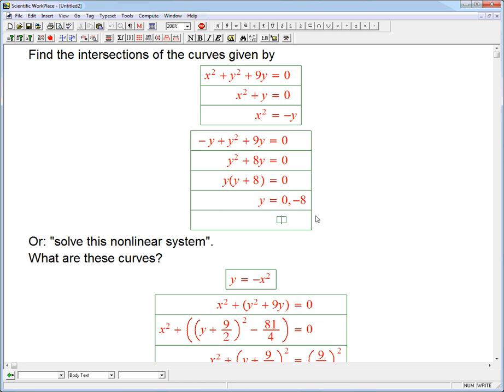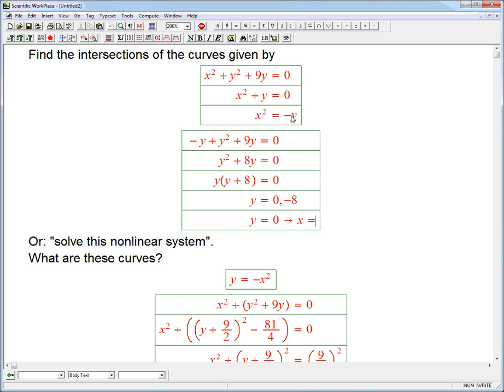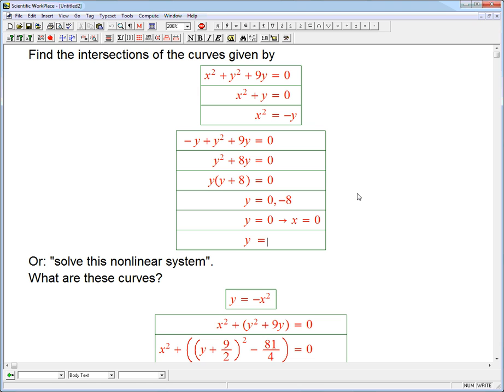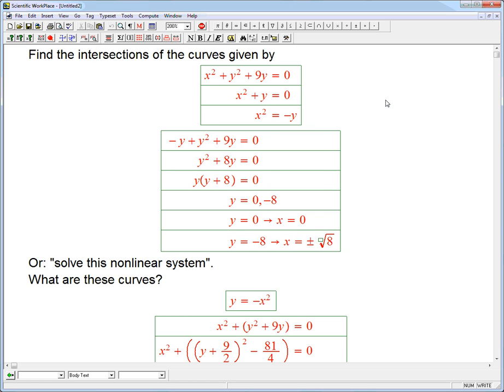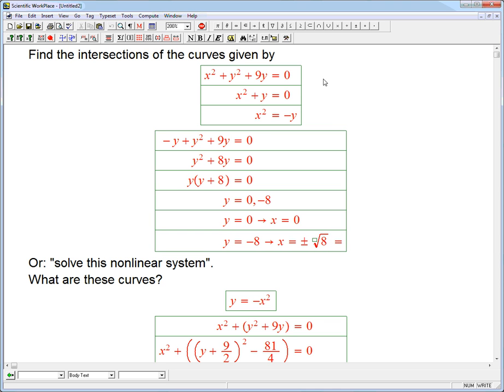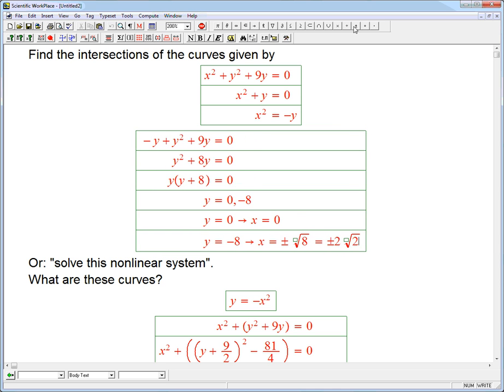So then, if y equals 0, then that's going to give x, of course, is the square root of 0, which is 0. And if y equals minus 8, then that's going to give x is going to be the square root of minus that, which is the square root of 8. Oh! Plus or minus. Plus or minus. Because of the symmetry. And so that's going to be equals plus or minus 2 root 2. Okay. So there's those three points of intersection.